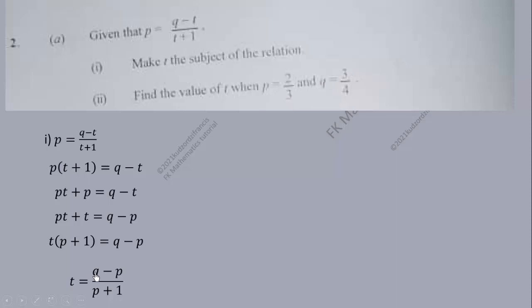So let's do the substitution. Wherever we see p we put 2 over 3, and wherever we see q we put 3 over 4. So that is what we get here.